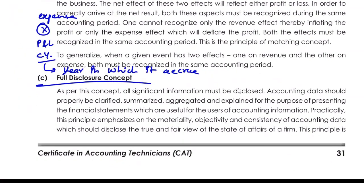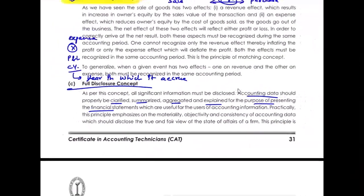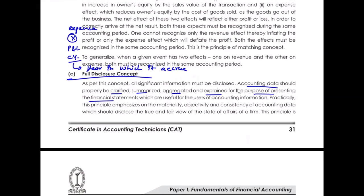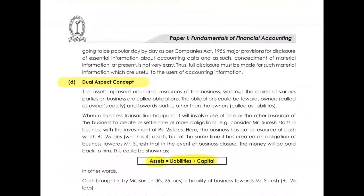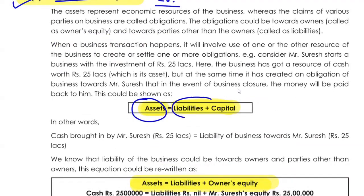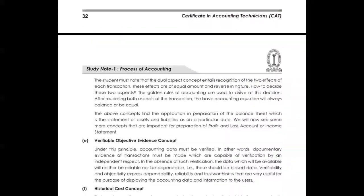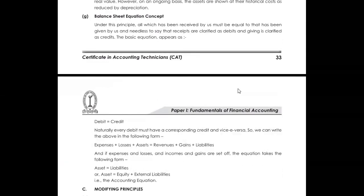Full disclosure concept: whatever data and assumptions you are using should be clarified, summarized, aggregated, and explained for the purpose of presenting the financial statement, so that users can make a meaningful interpretation. You have to disclose every piece of information and every principle you are using. Then dual aspect: with every debit there is a credit. Your assets will always be equal to liabilities plus capital — that is also called the accounting equation.